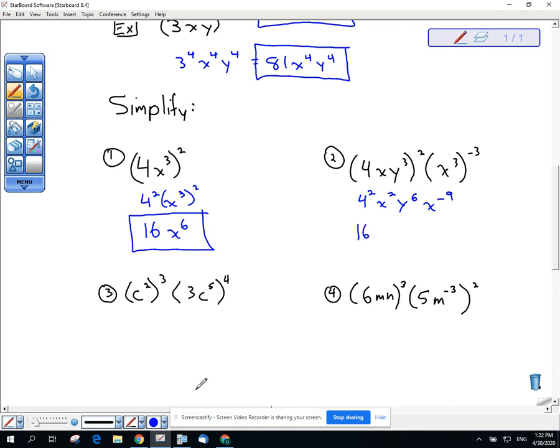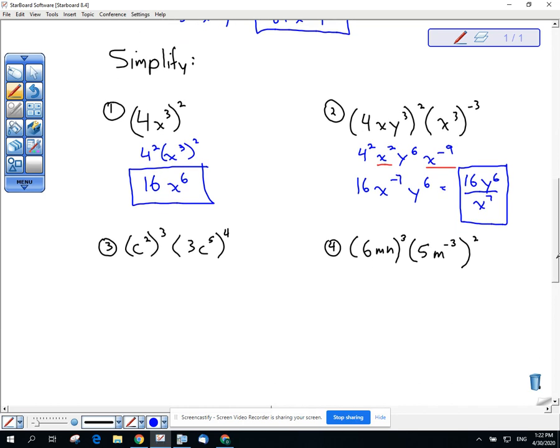4 squared is 16. Here you have X squared times X to the negative 9th. That is X to the negative 7th. That's the product property from 8.3. And then you still have Y to the 6th. So yes, we should move it and lose it with that X to the negative 7th. And your answer will be 16Y to the 6th over X to the 7th. 16 and Y to the 6th stay in the numerator. This is a positive exponent. X to the negative 7th. That's where you apply move it and lose it. That is correct. 16Y to the 6th all over X to the 7th.